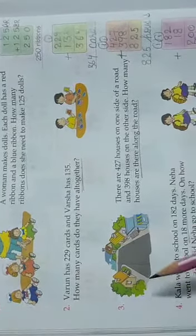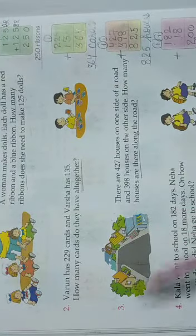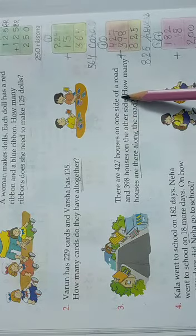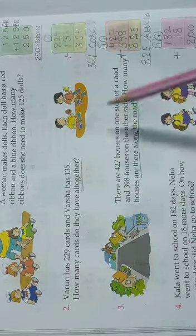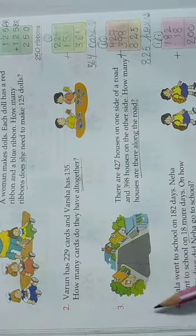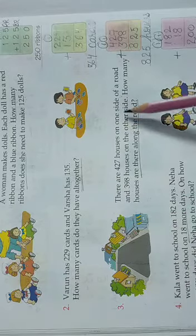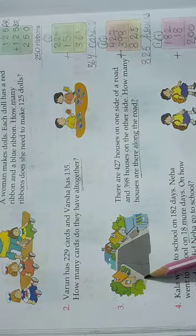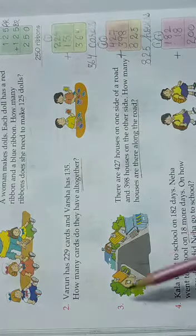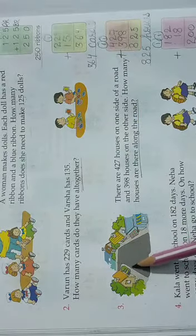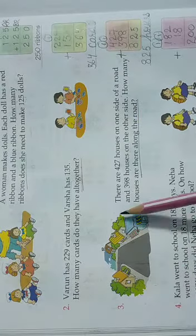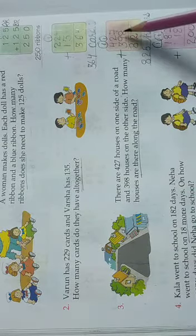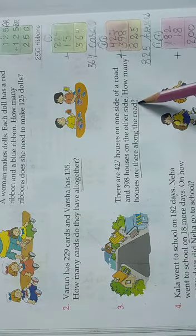Now see the third one. We can see a road here and we can see houses on both sides of the road. There are 427 houses on one side of the road. On one side of the road, 427 houses, and 398 houses on the other side.